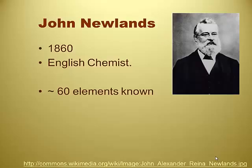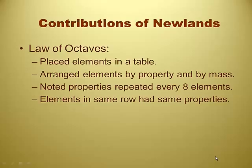It's about 1860. The Civil War is breaking out in America, and meanwhile this English chemist John Newlands has nothing to do in Britain, so he decides to try and arrange the 60 known elements. There were still 114 elements total, but they only knew about 60. John gets credit for the first organization — he places these elements in his own table, arranges them by property and by mass, and notes that properties are repeated every eight elements.